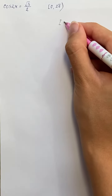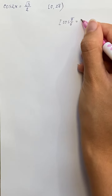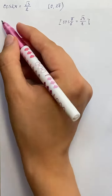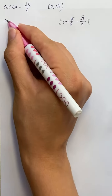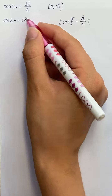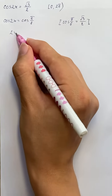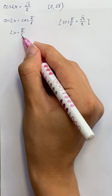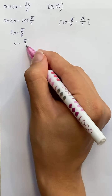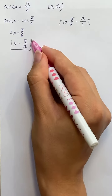We know that cosine of pi over 6 equals square root of 3 over 2, so cosine of 2x equals cosine of pi over 6, which gives us 2x equals pi over 6, and therefore x equals pi over 12. So this is our first solution.